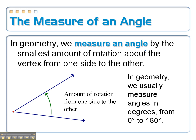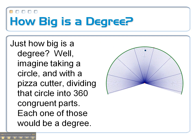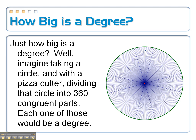Whenever you take pre-cal, you'll go outside of that little interval. So you might ask yourself: how big is a degree? If you could take a circle and use a pizza cutter to cut it into exactly 360 congruent parts, just one of those parts would be a degree. It's pretty tiny.